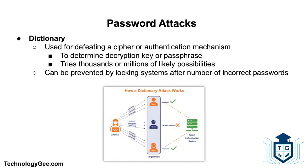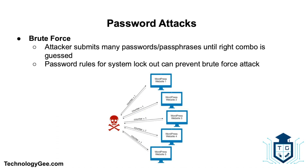Next we have a dictionary attack. This is a form of a brute force attack technique for defeating a cipher or authentication mechanism by trying to determine its decryption key or passphrase — trying thousands or millions of likely possibilities such as words in a dictionary or previously used passwords from lists obtained from past security breaches. Dictionary attacks can be prevented by locking systems after a specified number of incorrect passwords and by requiring sophisticated passwords that do not include identifiable information such as birthdays or family names.